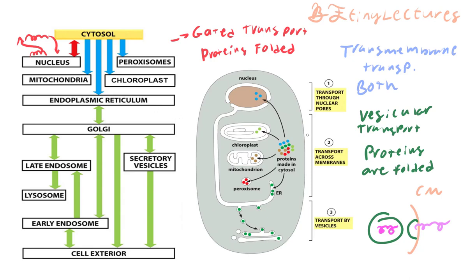Looking at a diagram of the cell, proteins made in the cytosol can take different paths. Some go through transmembrane transport, some through vesicular transport, and others through gated transport — for example, proteins going into the nucleus use gated transport, proteins going to the chloroplast use transmembrane transport, and proteins going into vesicles use vesicular transport.